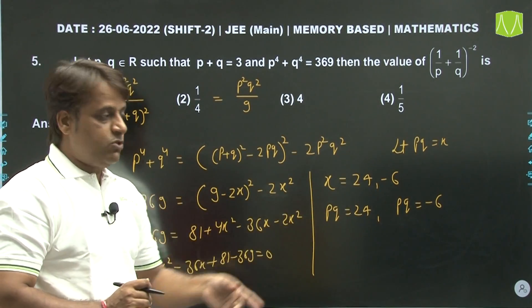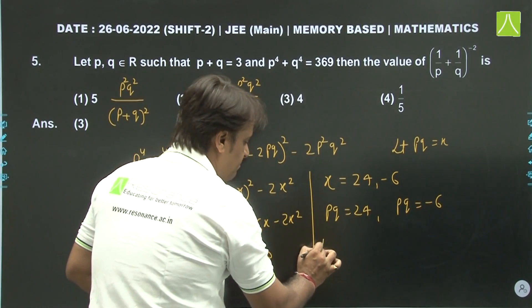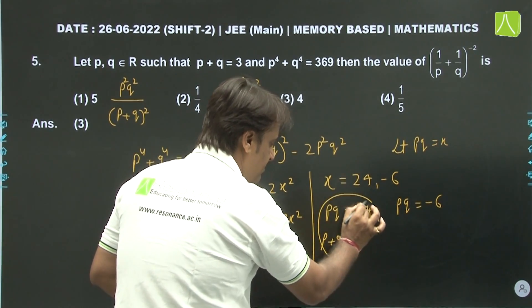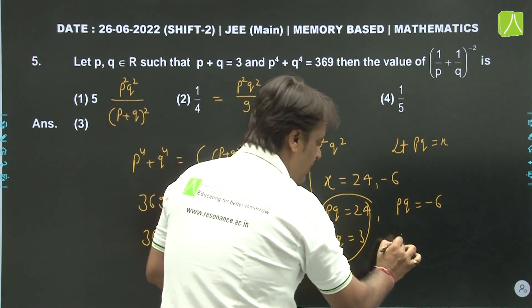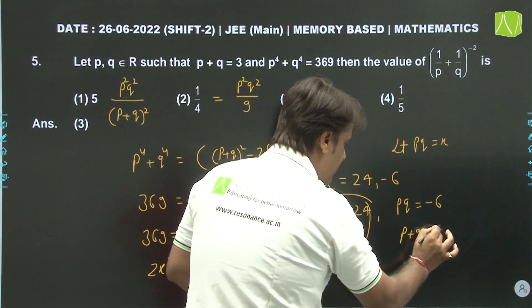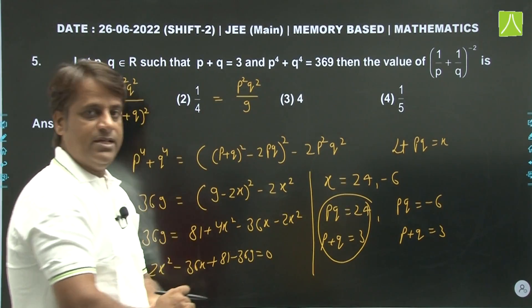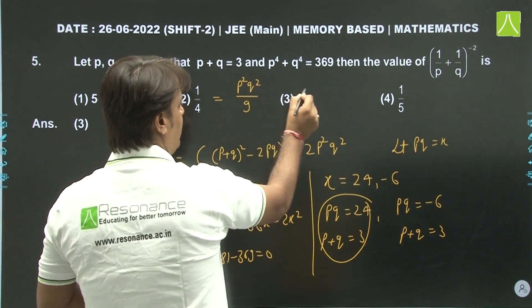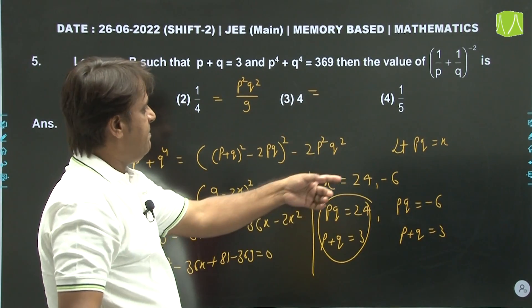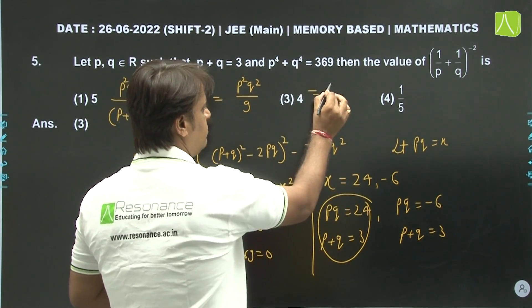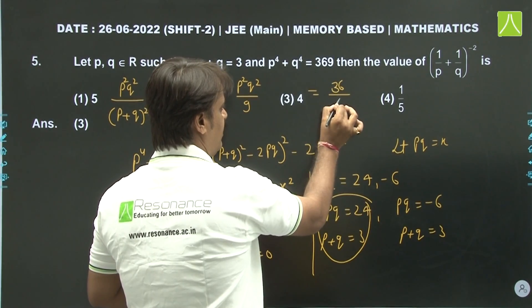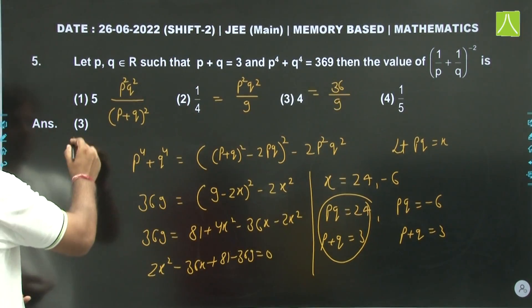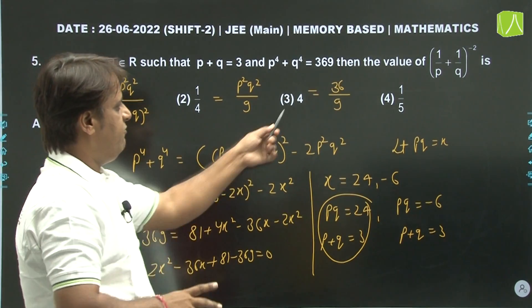Since P and Q are real numbers, PQ = 24 with P+Q = 3 would give imaginary values (discriminant negative), so we take PQ = -6. Therefore P²Q² = 36, and the answer is 36/9 = 4. The third option, which is 4, is the correct answer.